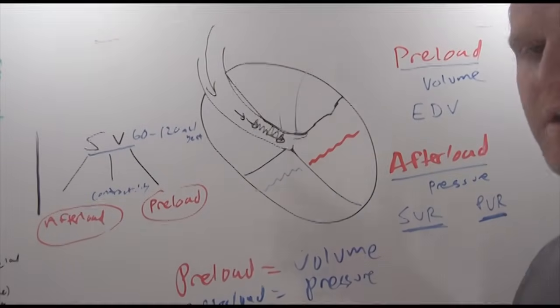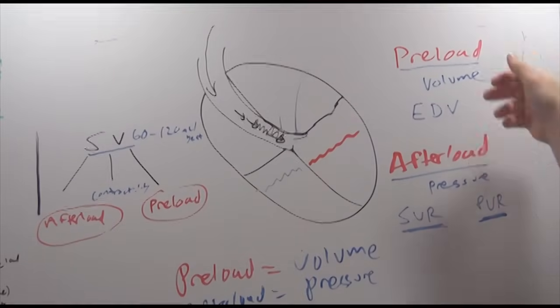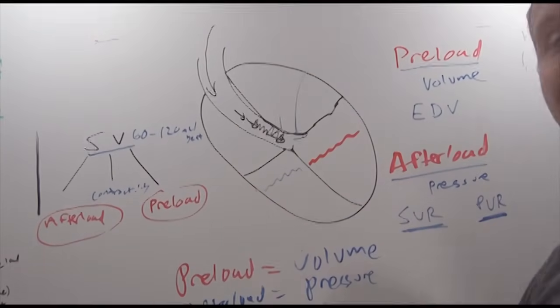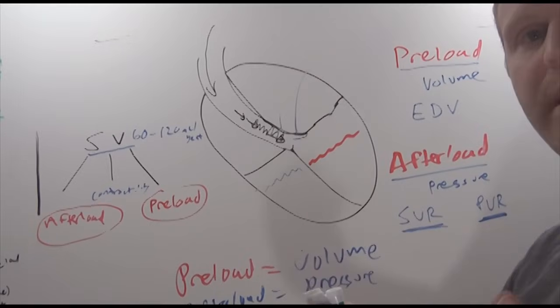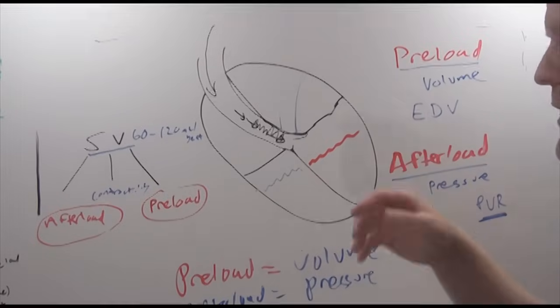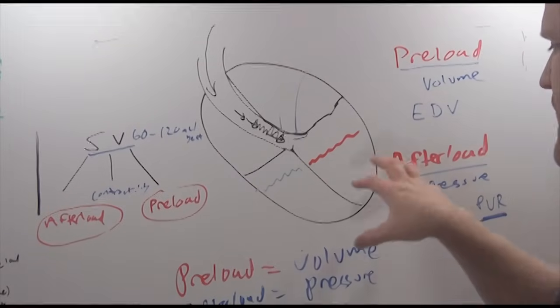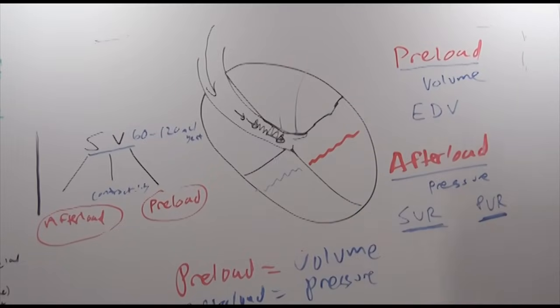So that's the really short video for this. We're going to get into more things that we can do to directly affect these numbers of preload or afterload and our contractility and how we can affect those. If a patient has a low systemic vascular resistance, what are we going to do to bring that up? If a patient has a low preload or a low end diastolic volume, how are we going to increase that or how can we decrease it? So we'll talk about different disorders that might cause these numbers to be altered and what we can do to fix that.